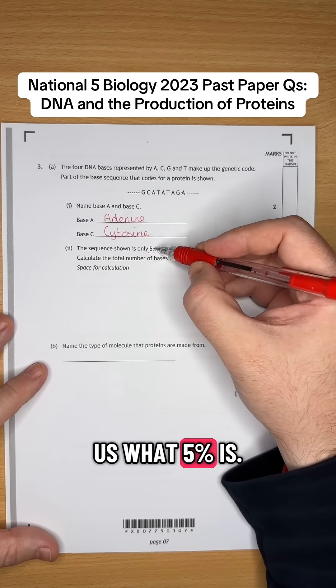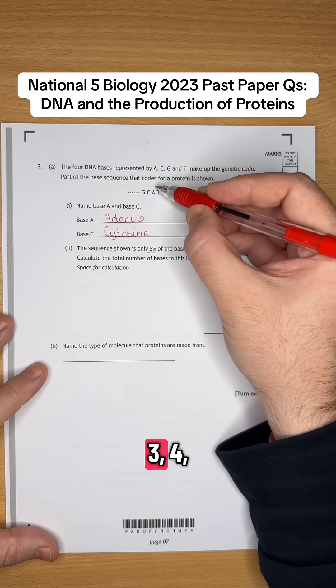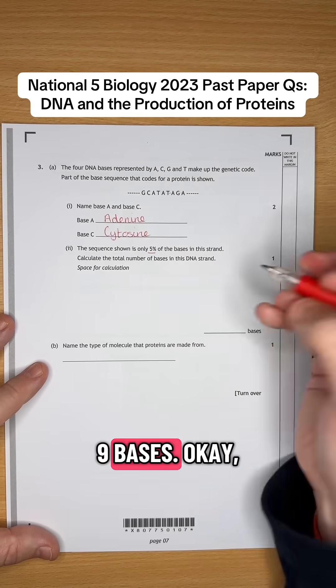It's telling us what 5% is. 5% is 1, 2, 3, 4, 5, 6, 7, 8, 9 bases. So 9 bases that are shown here is 5%.